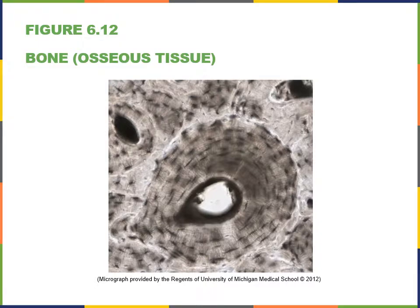Bone is another type of supporting connective tissue. In the matrix of bone there are collagen fibers surrounded by solid calcium salts called hydroxyapatite. The mature cells of bone are called osteocytes, found in chambers called lacunae, similar to the lacunae of cartilage. The function of bone is to provide structure and protection for the body, and bone tissue will be studied in more detail when covering the skeletal system.